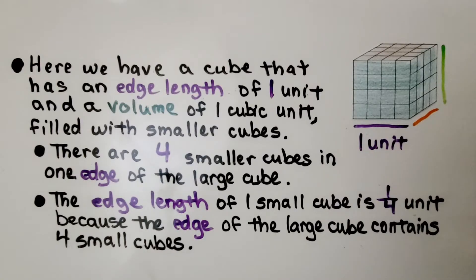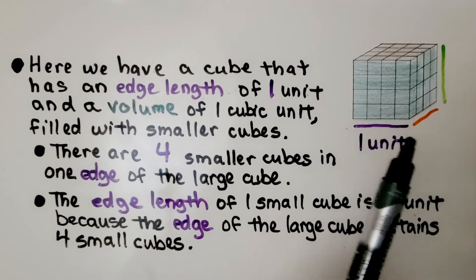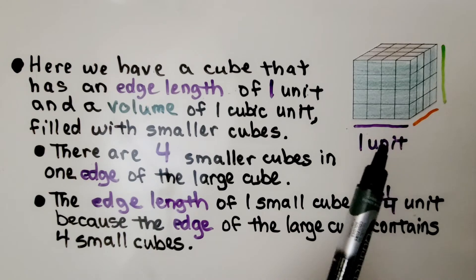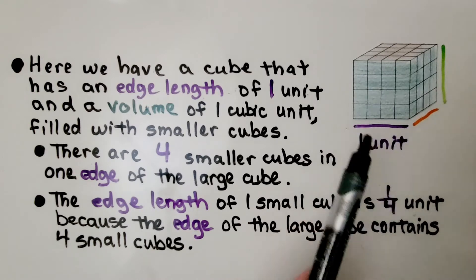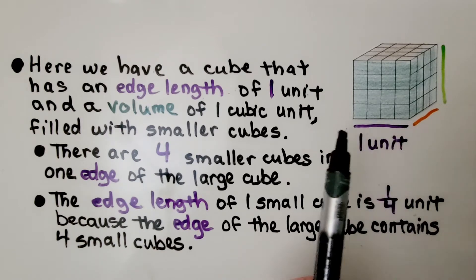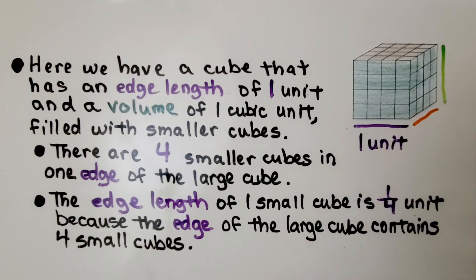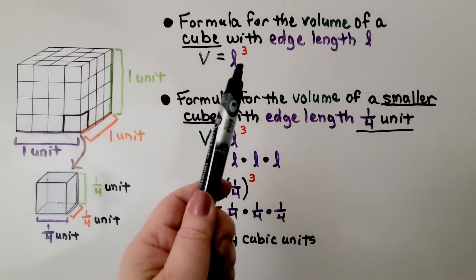Here we have a cube with an edge length of 1 unit — it could be 1 inch, 1 foot, 1 yard, 1 meter — it's 1 unit, with a volume of 1 cubic unit. There are 4 smaller cubes along the edge of this large cube, so the edge length of one small cube is 1/4 unit. We saw that the formula for the volume of a cube with edge length L is V equals L cubed.